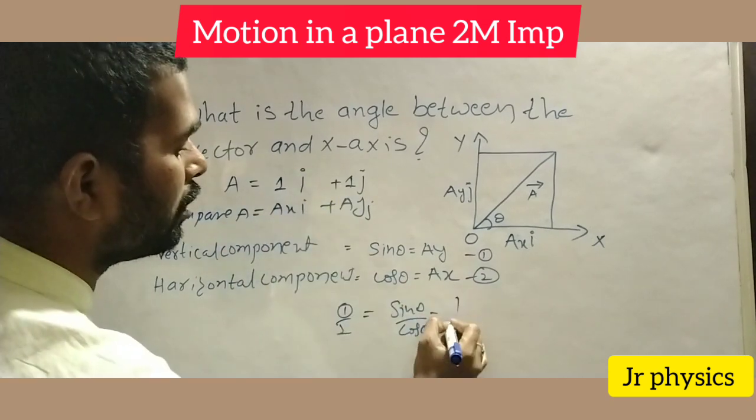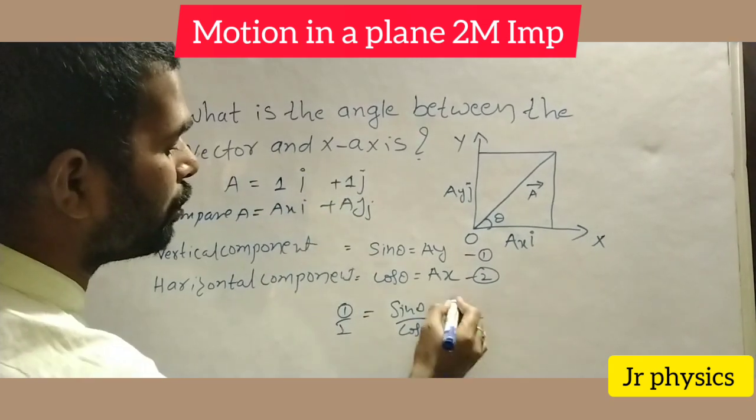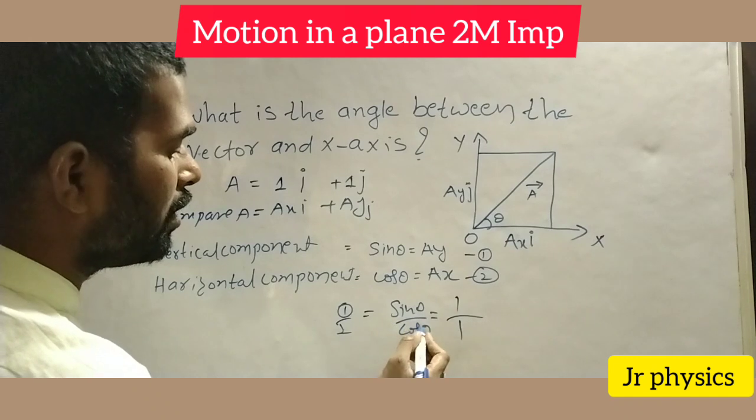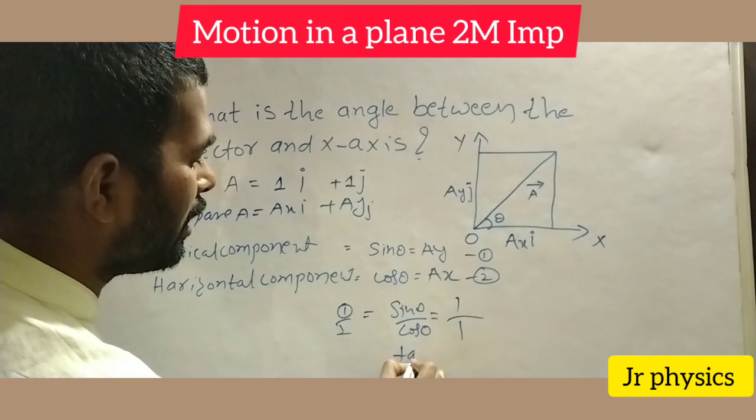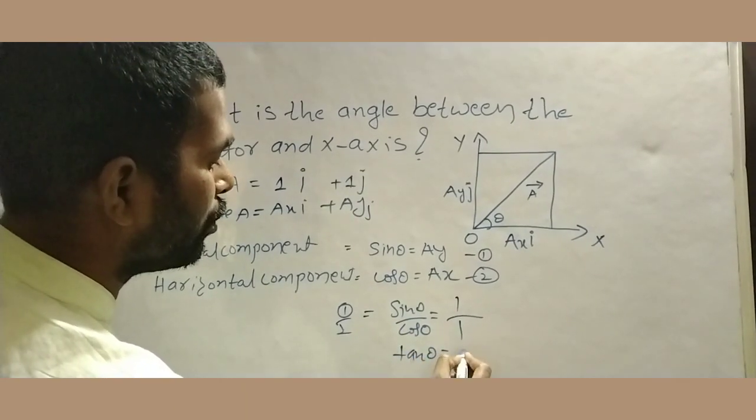Ay component is 1, ax component is 1. 1 by 1, sin theta by cos theta equals tan theta, tan theta equals 1.